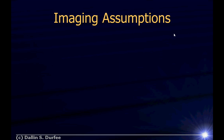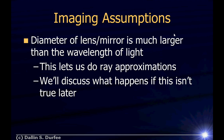Before we talk about how to make images with mirrors, we need to describe the assumptions we're going to use. First, as discussed earlier, in this part of the optics section we're going to be using the ray approximation. To do that, we have to assume that the diameter of your lens or mirror is much larger than the wavelength of light. When that's true, we can do the ray approximation. We'll discuss what happens if this isn't true later.